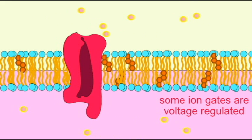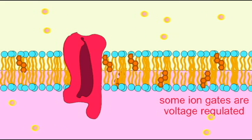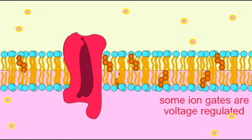So these gates are voltage regulated. What determines whether they are open or closed is the voltage across the cell membrane.